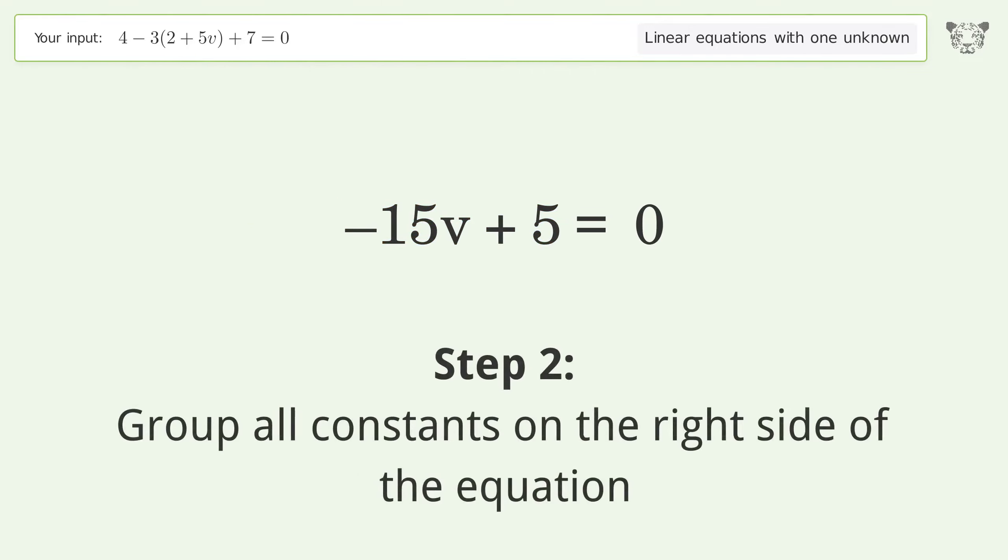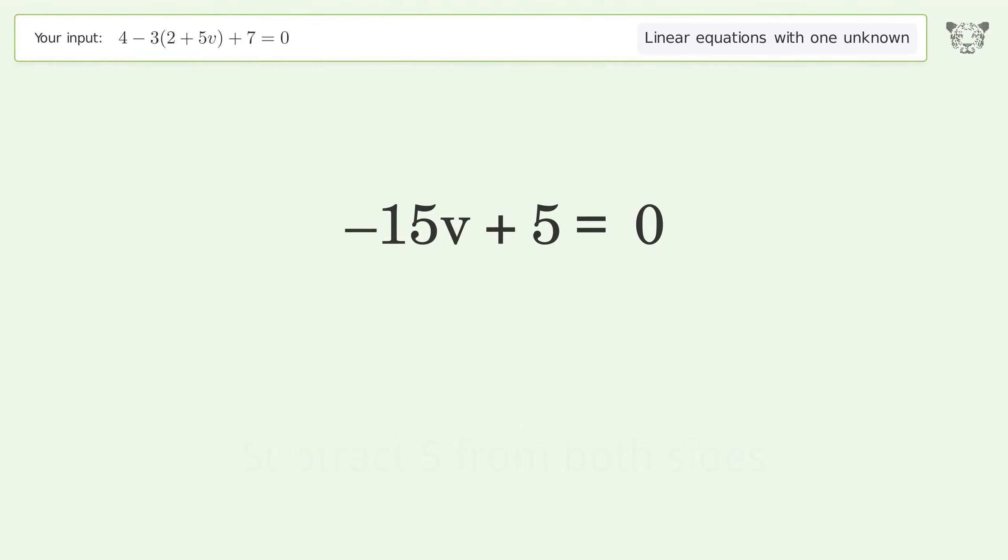Group all constants on the right side of the equation. Subtract 5 from both sides. Simplify the arithmetic.